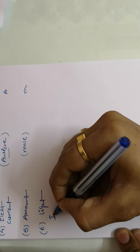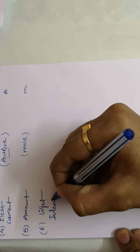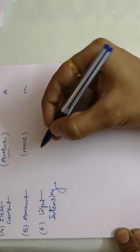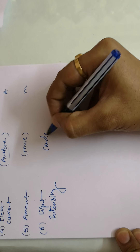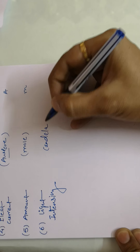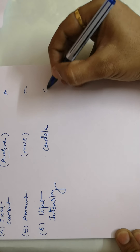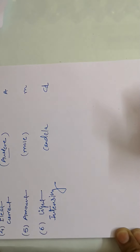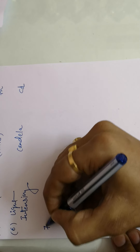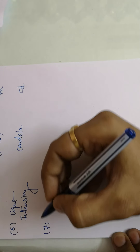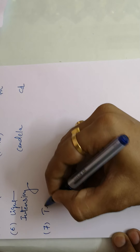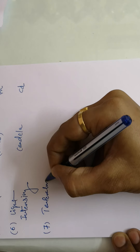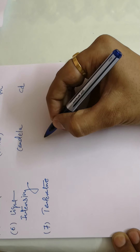The sixth one is light intensity. Its unit is called candela, and it is represented by the symbol 'cd'.